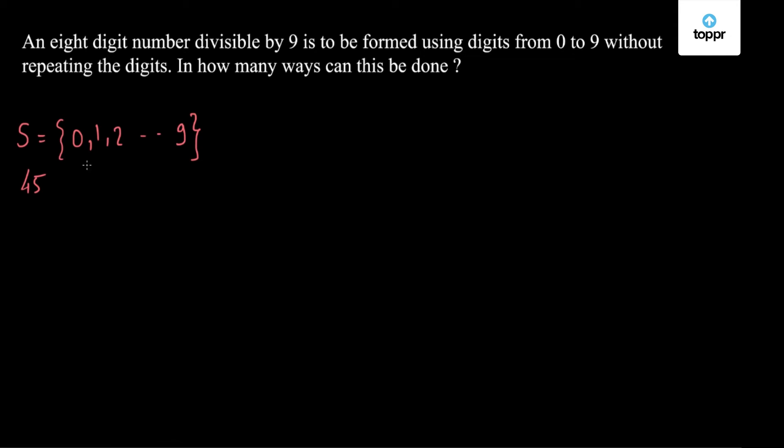So from these 10 digits first we have to choose 8 digits. That is we have to exclude 2 digits every time. But these 8 digits must be such that their sum is divisible by 9. Already the sum of these 10 digits is 45 which is divisible by 9. So if we subtract 9 from this we will get 36.